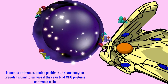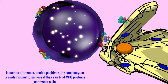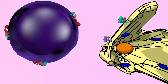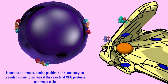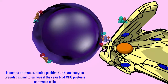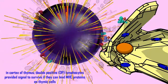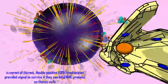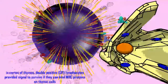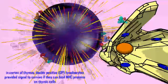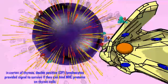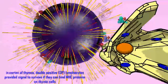In the thymus, those T lymphocytes which interact with MHC compounds are given a survival signal to proceed further in their development, while those which do not interact with MHC complex proteins will not be given this survival signal, and they will die.